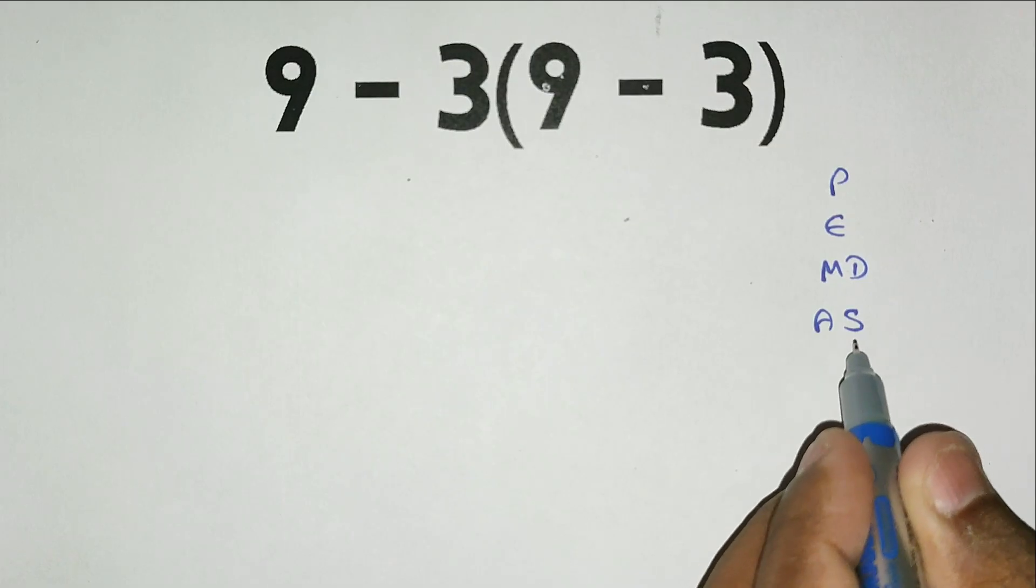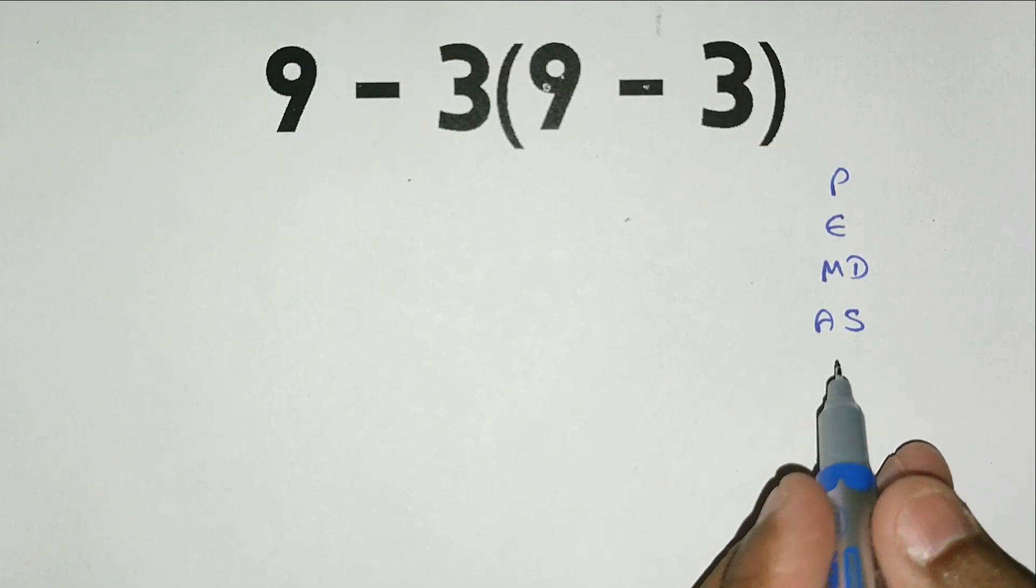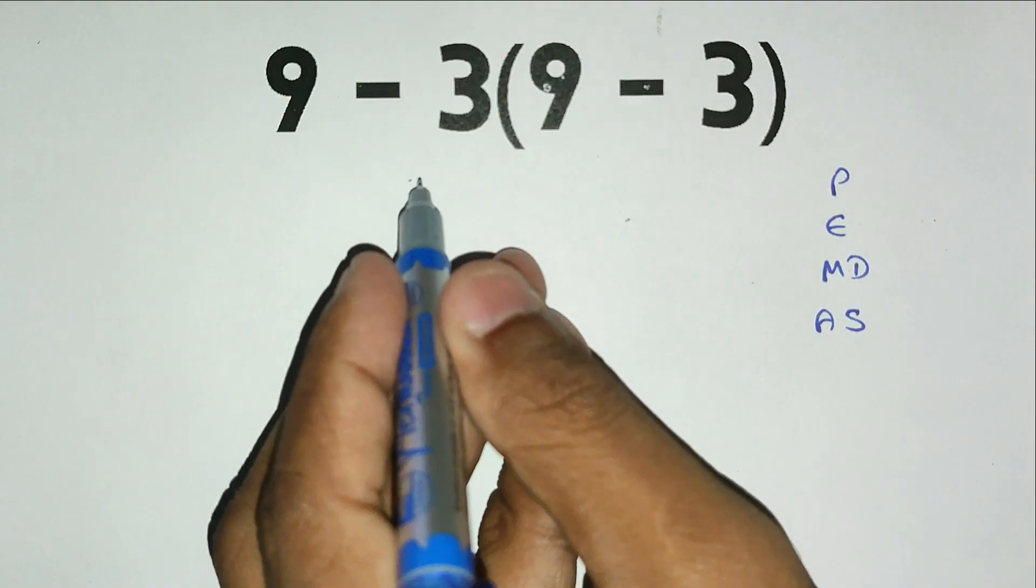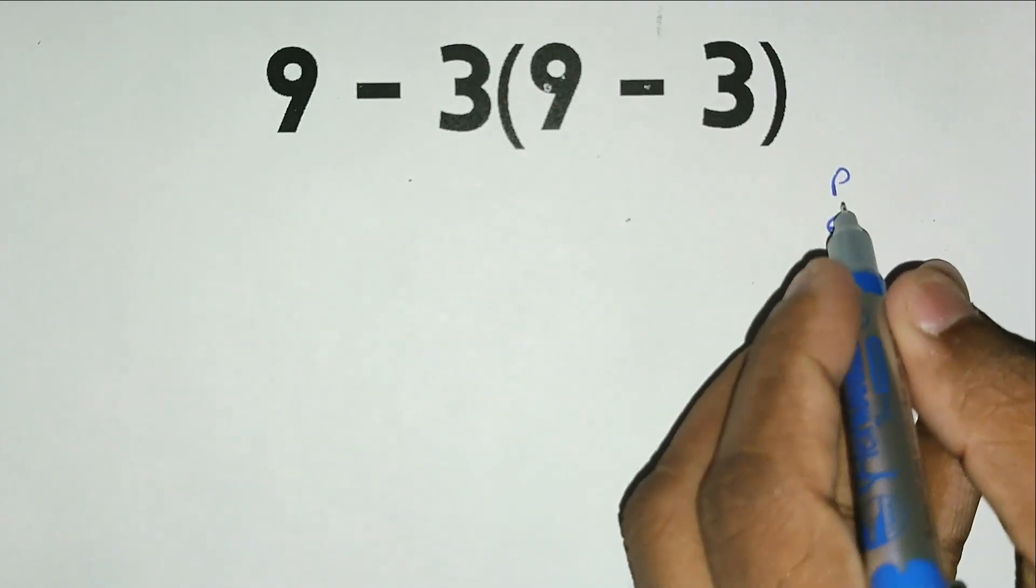Now let's apply PEMDAS to this expression. First we look for parenthesis, and here we have one. So let's solve what's inside the parenthesis first. We have 9 minus 3, which equals 6.